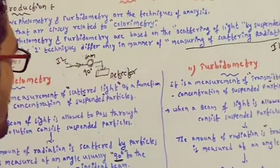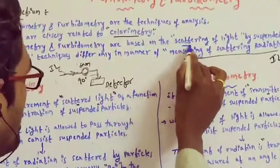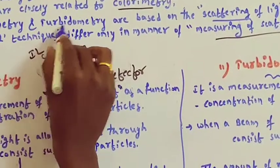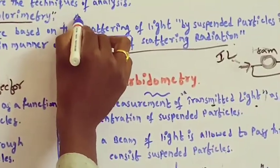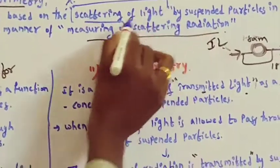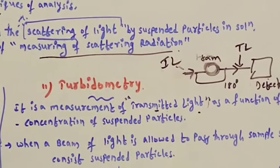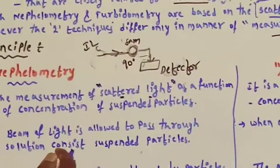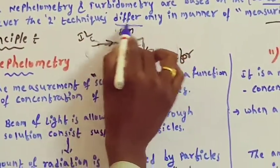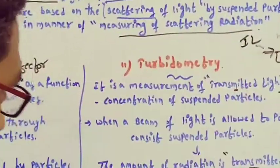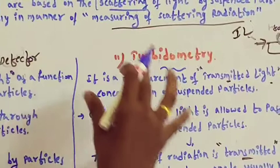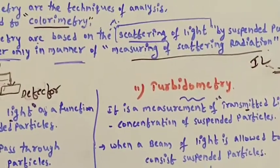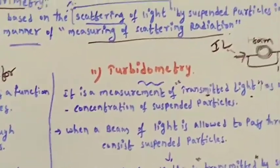Both nephelometry and turbidimetry are based on the measurement of scattering of light by suspended particles in the solution. These two techniques differ only in the manner of measuring the scattering — that is, the angle at which we are measuring the scattered radiation, which is different.